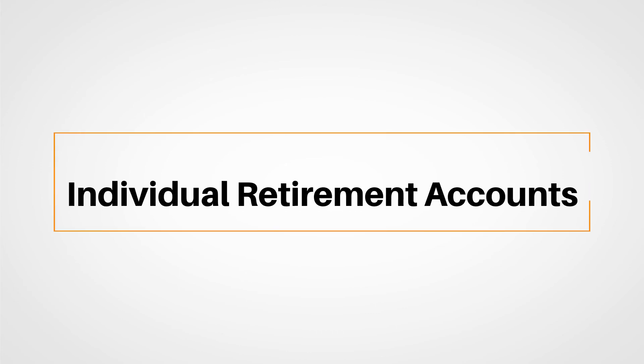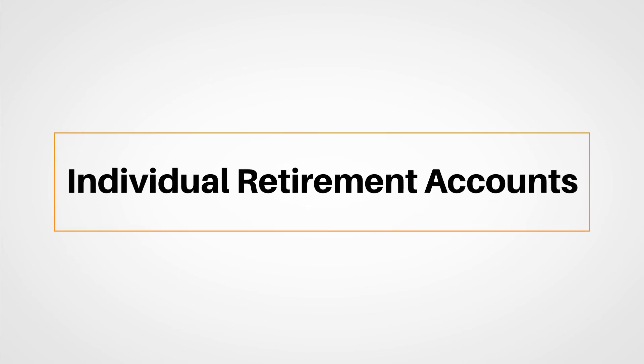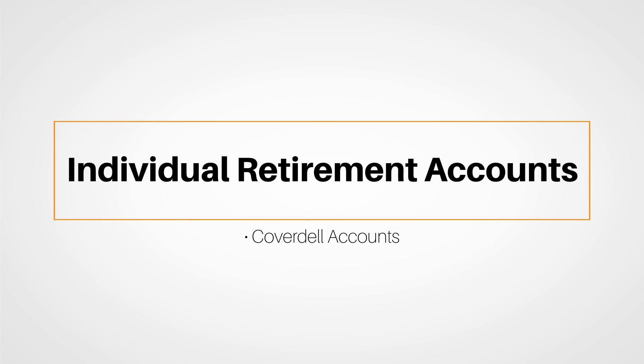We'll also talk about a couple of annuities that aren't sold as commonly as a standard fixed annuity. Equity index and market value annuities tend to be fairly complicated products, and you really need to know the terms and conditions of these potentially difficult products. Finally, the lesson ends with a consideration of individual retirement accounts. Our last item to consider will be educational IRAs called Coverdell accounts, which can be great for those looking to save for their children's education.